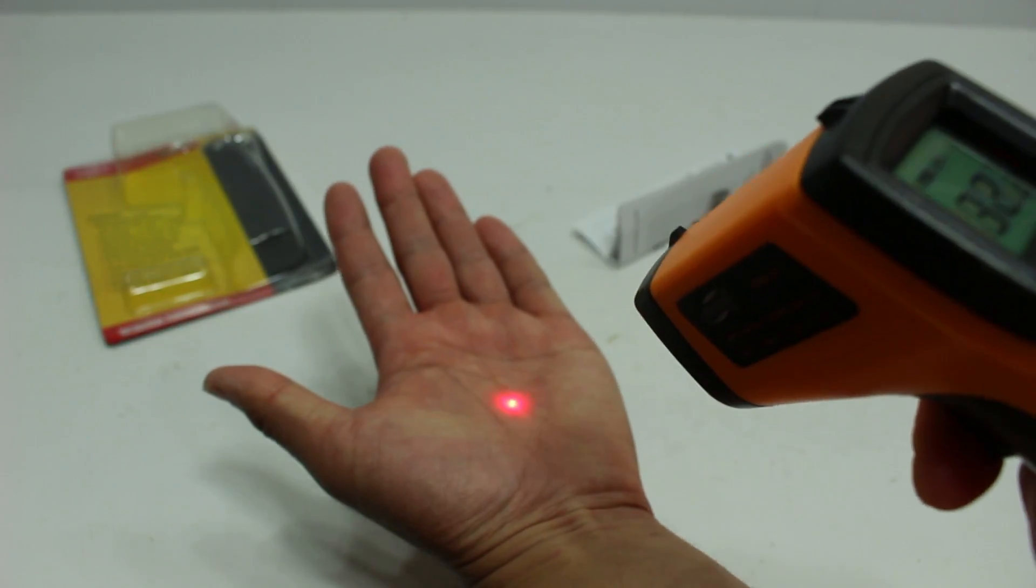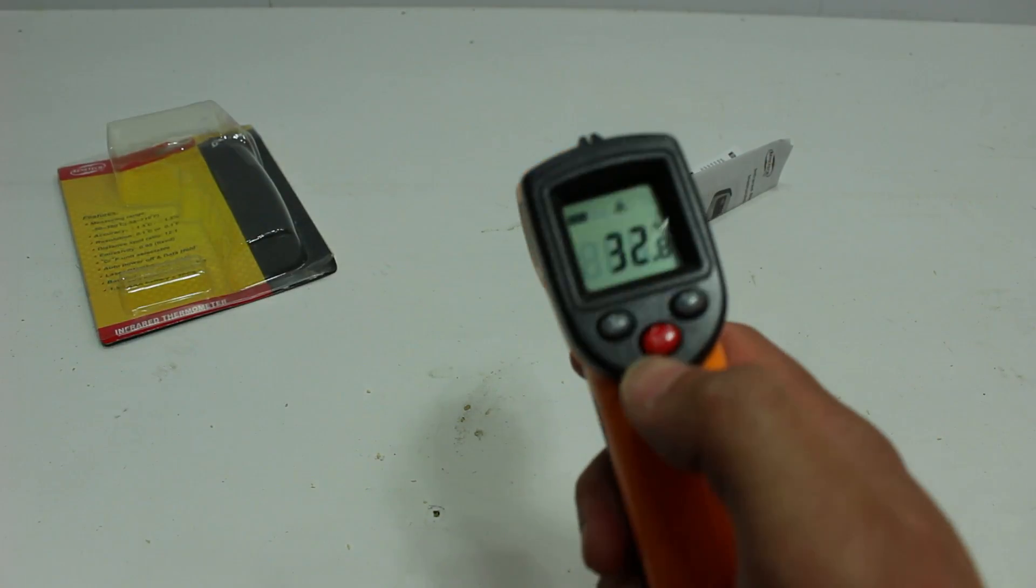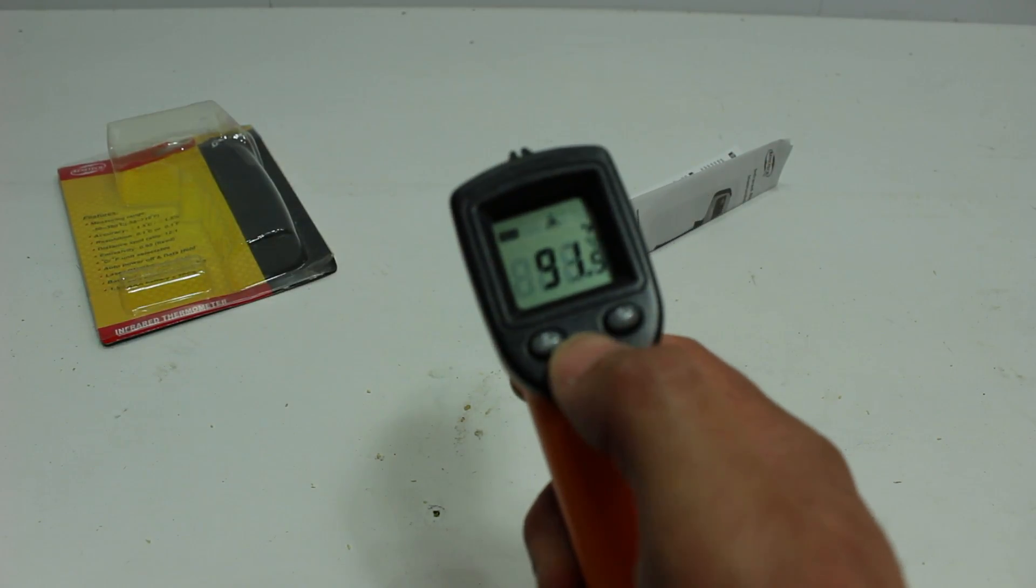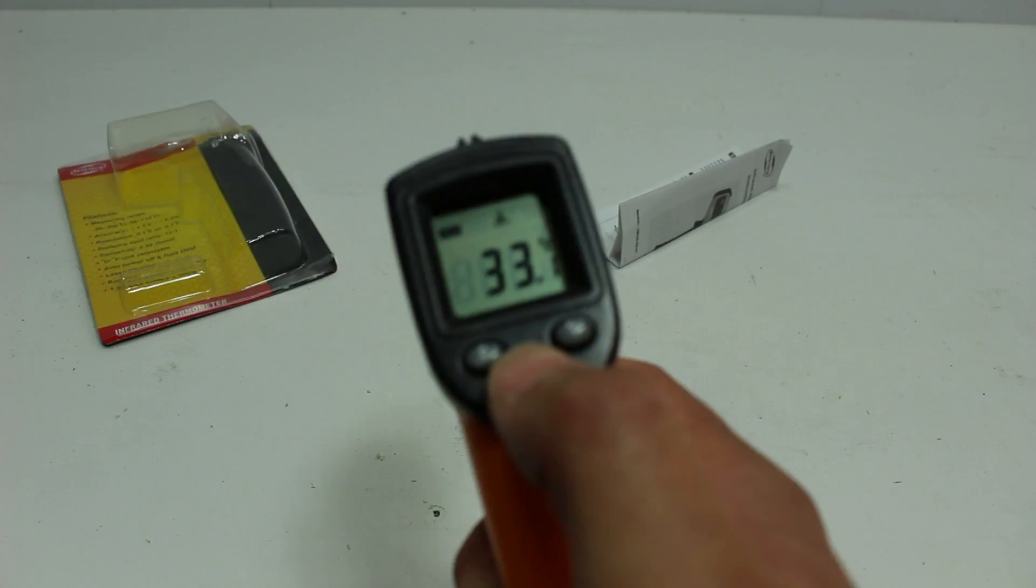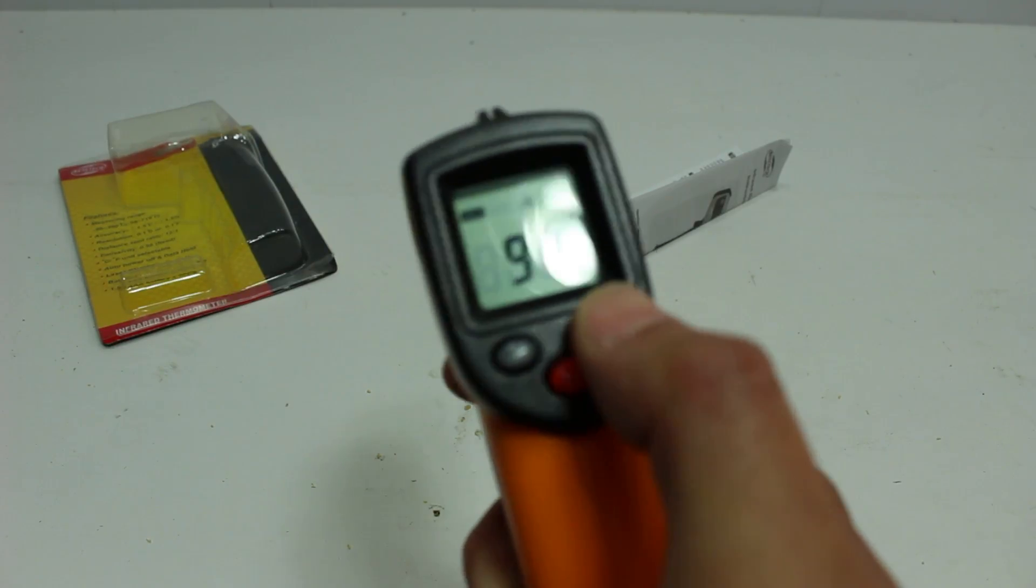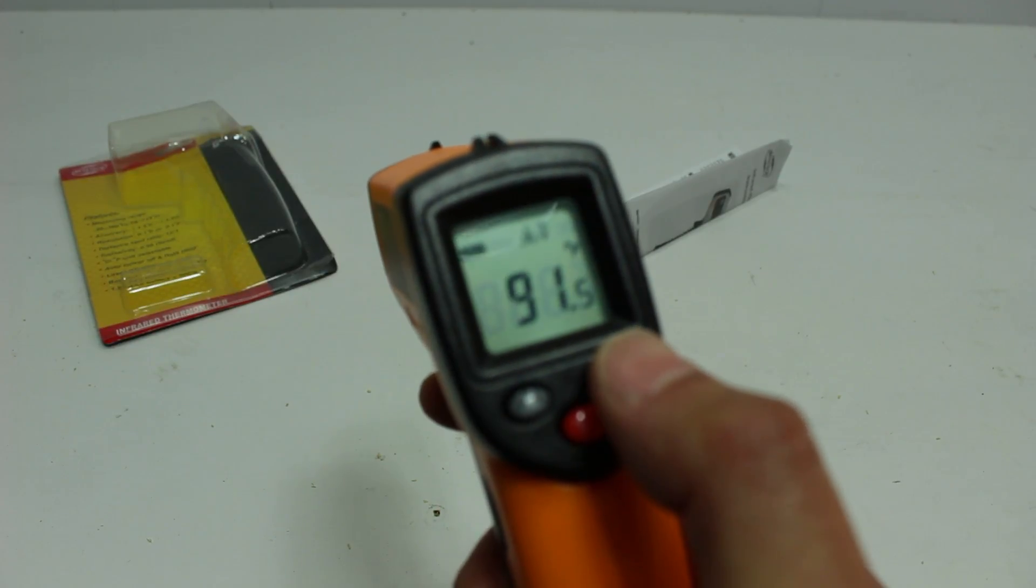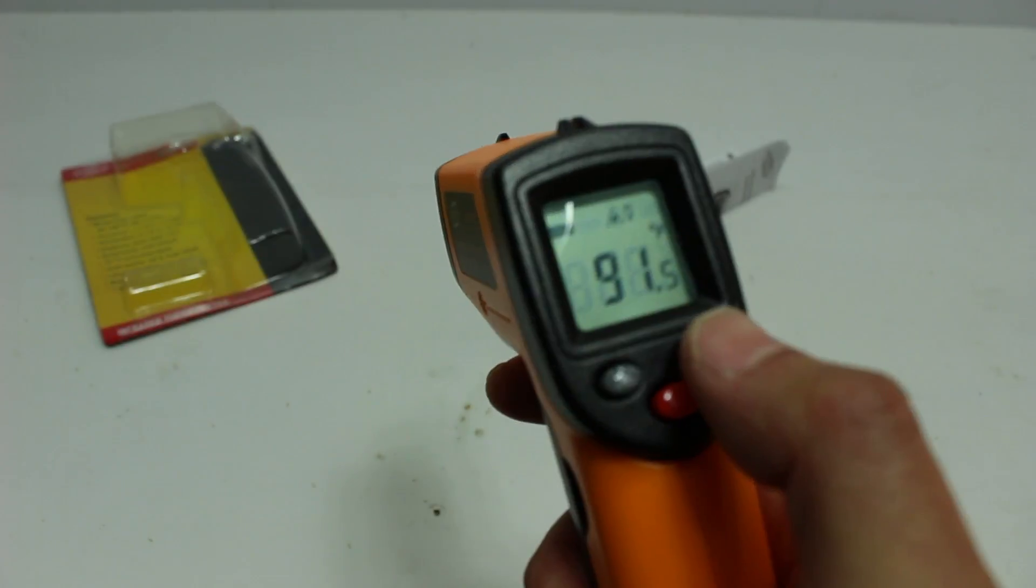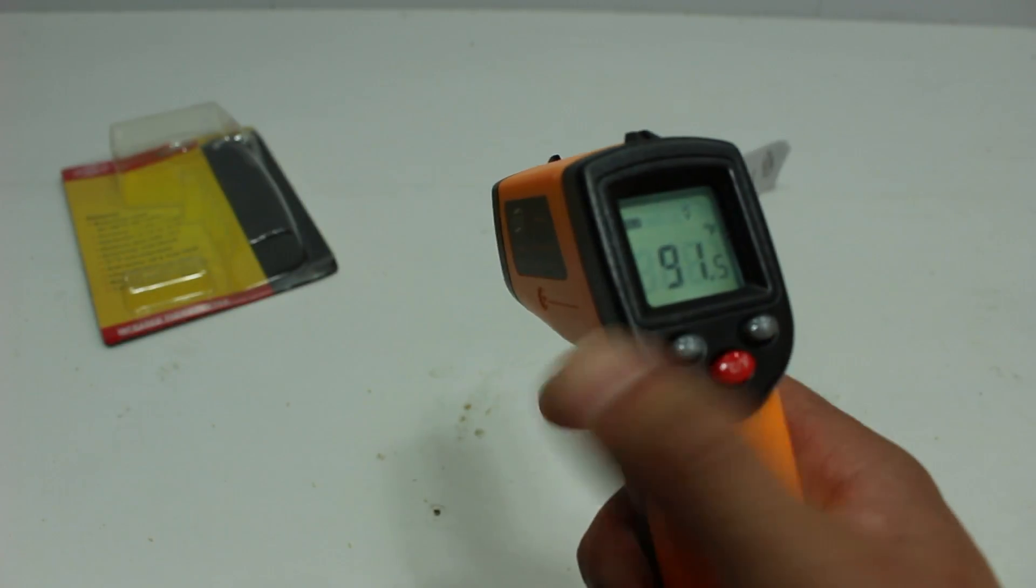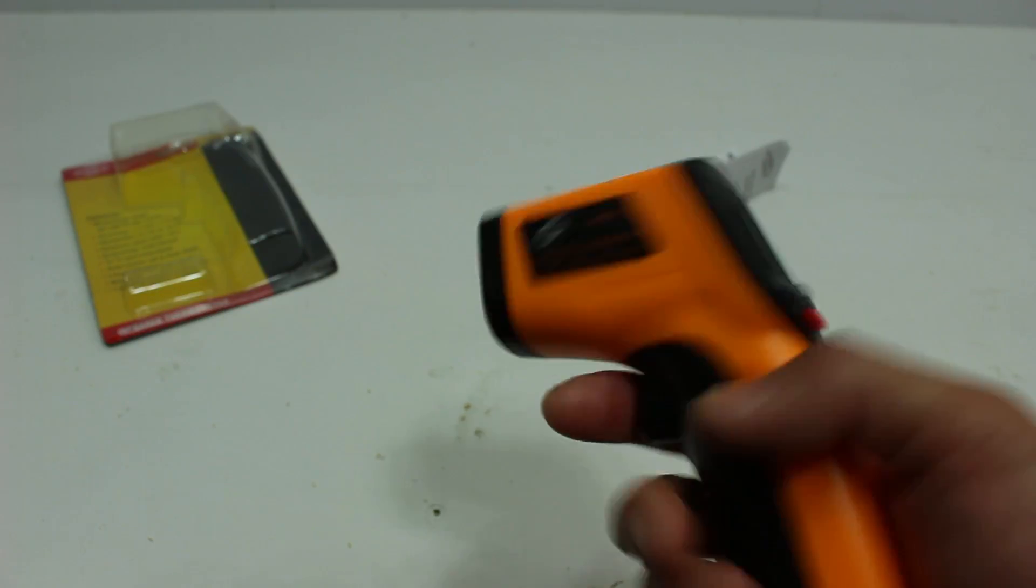If I turn the laser on, I can see what spot I'm actually measuring. You can toggle between Celsius and Fahrenheit with this button. There's a backlight that comes on and off. I can toggle that on and off. This here toggles the light on and off, and that's all there is to it.